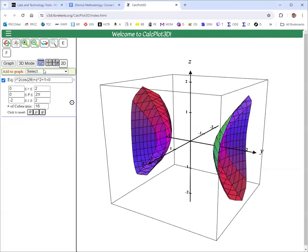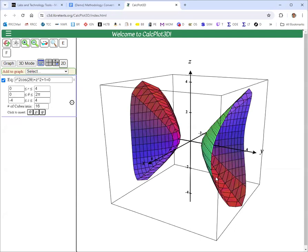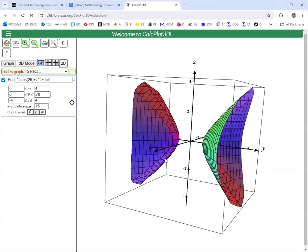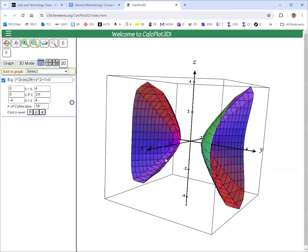So there's your hyperboloid of two sheets. And now we want to put in the equation that we found at the end of step three, the rectangular coordinate equation.